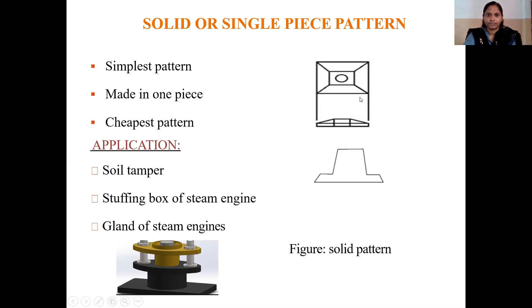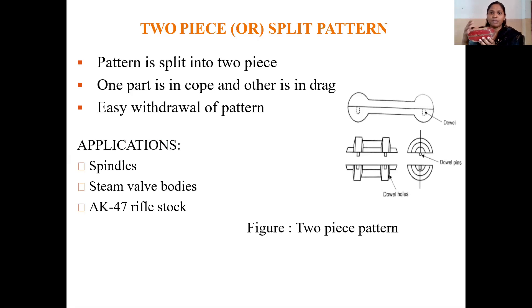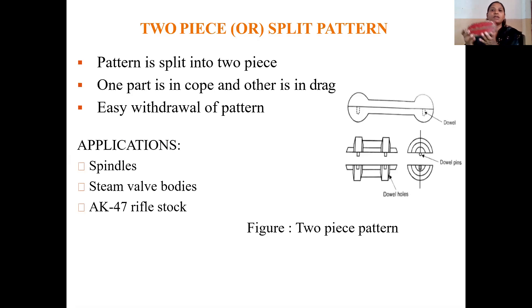Next is the two piece pattern or split pattern. By looking at it, it is very simple. A split pattern has two numbers — the patterns are in two pieces. As mentioned, the solid pattern is single piece only, with no other attachments, whereas in split pattern the patterns are two in number.